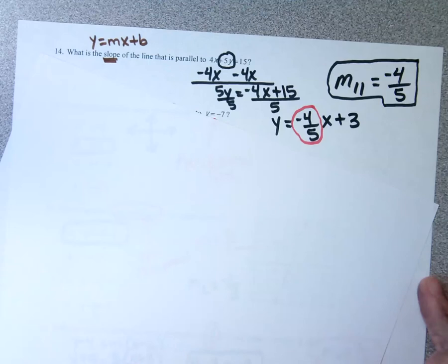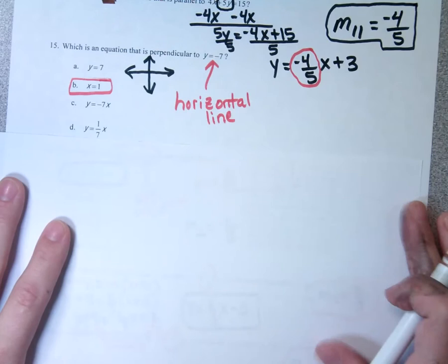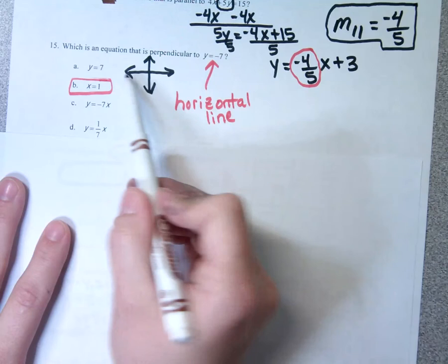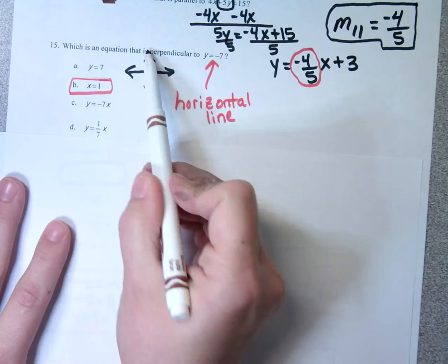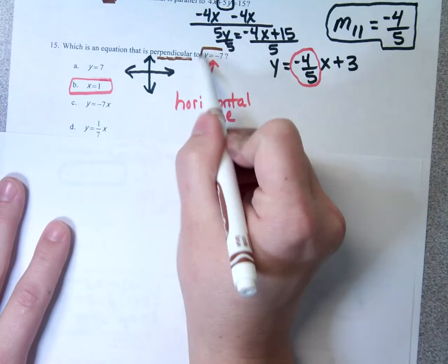This one wants to know what an equation would be that's perpendicular to Y equals negative 7. Remember, all Y equals lines are horizontal. So if I want something perpendicular to a horizontal line, I need a vertical line. Those are your X equals equations — so I know B is my answer choice. Horizontal lines and vertical lines are always perpendicular to each other.